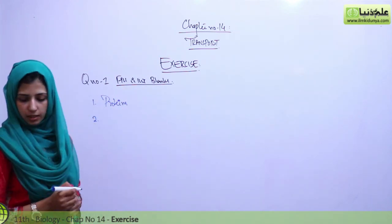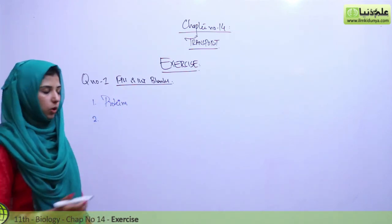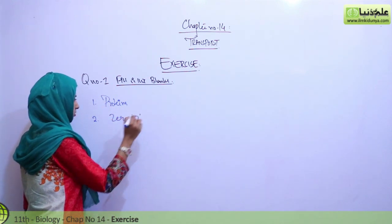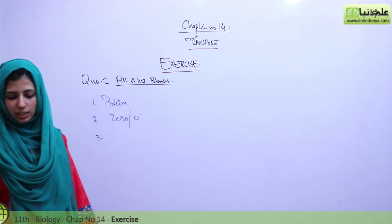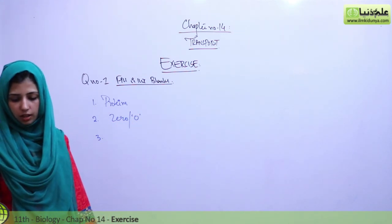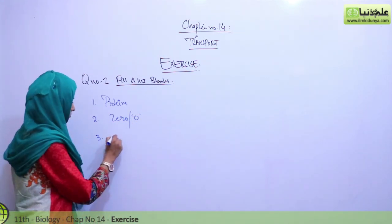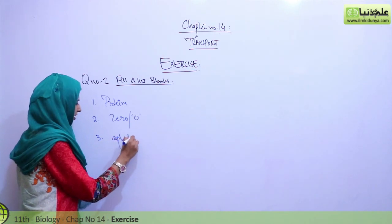Second is, pure water has a water potential which is equal to zero. Third statement is, the insects which feed on the phloem of plants are called aphids. Aphids was in yellow box.